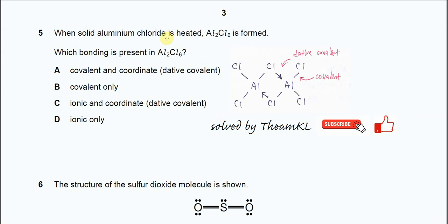Question 5. When solid aluminum chloride is heated, Al2Cl6 is formed. Which bonding is present in Al2Cl6?